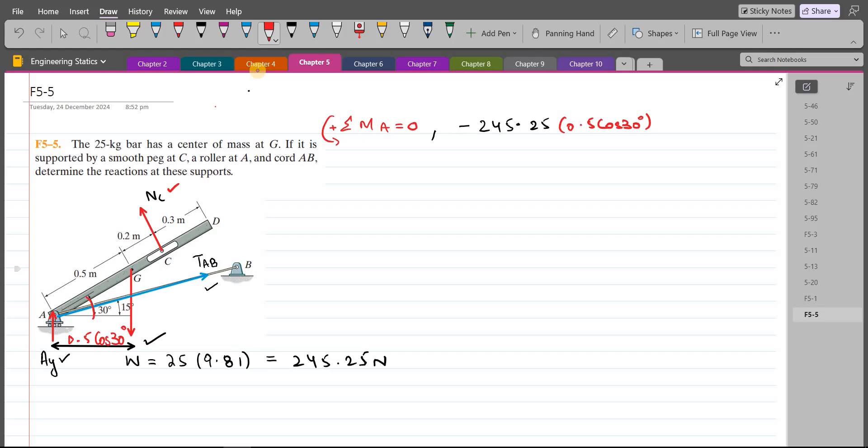The NC force is trying to rotate the bar in counterclockwise direction about point A, so the moment produced by the NC force will be taken as positive. So we have positive NC, and the moment arm, since NC is perpendicular to the bar AD, is 0.5 plus 0.2 meters, so 0.7 meters in total, equals to zero. So from here NC comes out to be 151.71 Newtons. So this is our first answer.